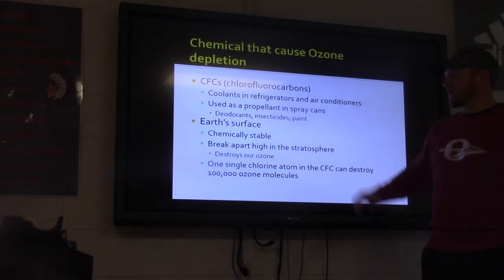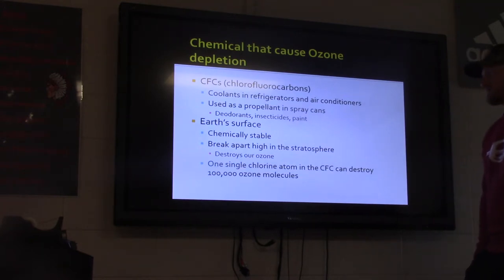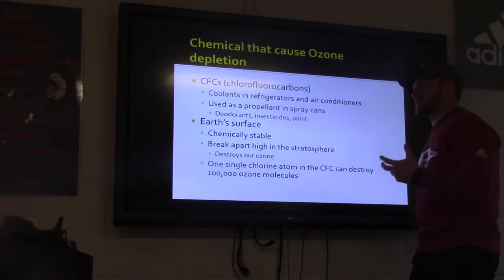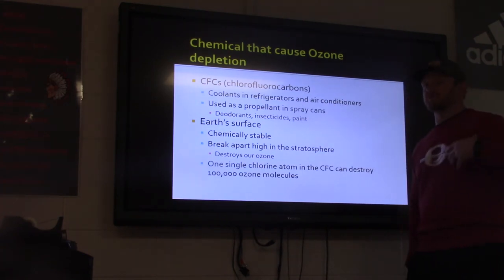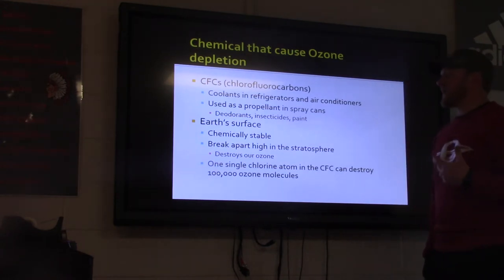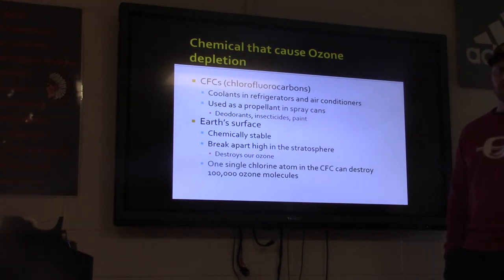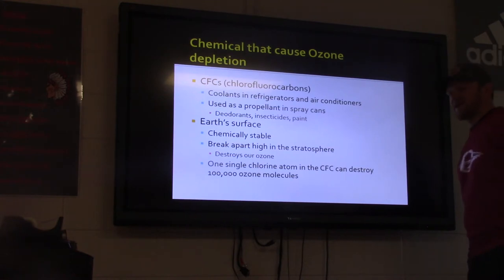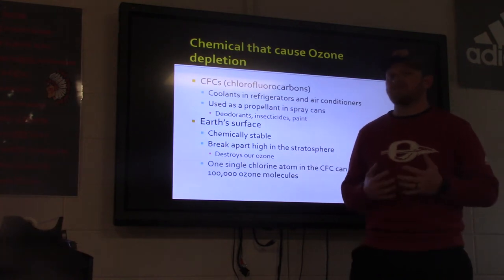CFCs live on Earth's surface and attach there. As they become chemically stable, they stay, and when the ozone molecules react with them, it breaks the ozone apart. One single chlorine atom in a CFC can destroy 100,000 ozone molecules, which is unbelievable. We banned CFCs back in the 90s, and since then, the ozone layer has gotten much better.